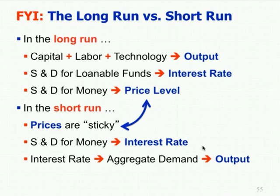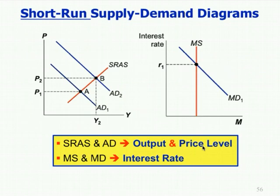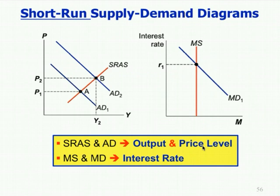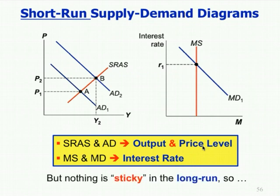Here are the short run supply and demand diagrams. On the left, aggregate demand influences short run aggregate supply and demand — a shift in aggregate demand has some increase to the price level. Because short run aggregate supply is not perfectly vertical, prices don't go up by as much as aggregate demand shifts — that's the long run effect. In the short run, prices do go up, just not as much because they're sticky, but it will increase output and increase prices.